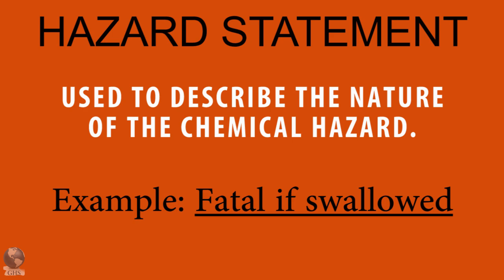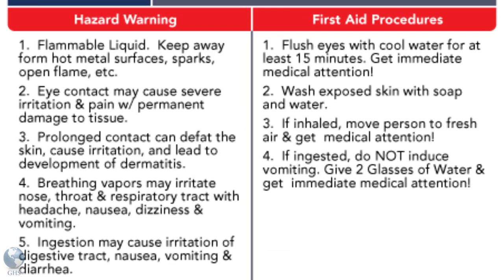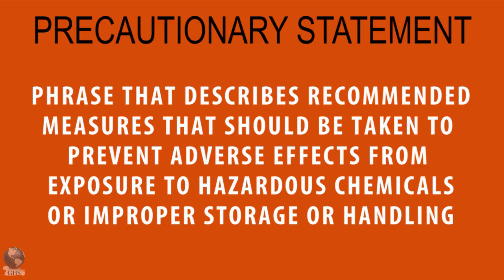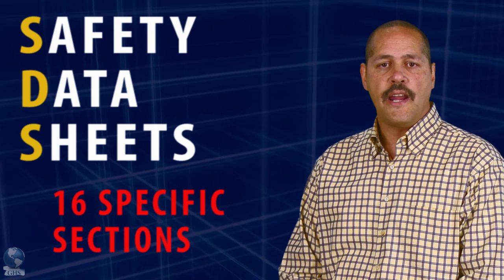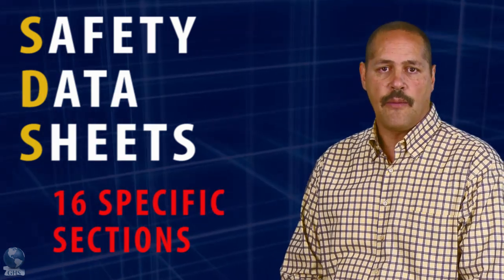Hazard statements are used to describe the nature of the chemical hazards, including where appropriate the degree of hazard. All applicable hazard statements must appear on the label. Hazard statements may be combined where appropriate to reduce redundancies and improve readability. Precautionary statements are defined as a phrase that describes recommended measures that should be taken to minimize or prevent adverse effects from exposure to hazardous chemicals or improper storage or handling.